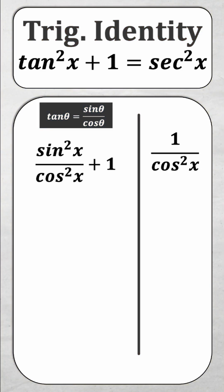And you might be wondering well what's the common denominator between cos squared x and one? Well it's just cos squared x. Remember anything divided by itself is just one so I can rewrite one as cos squared x over cos squared x.